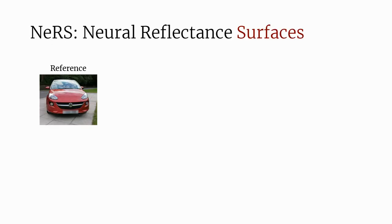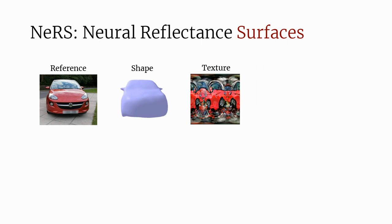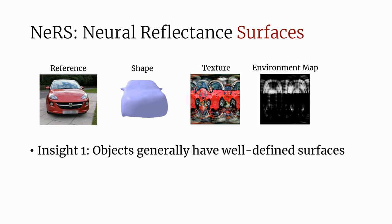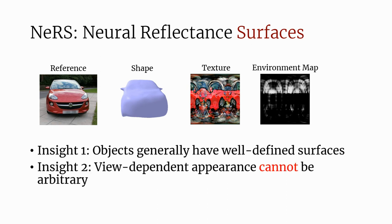To address this, we propose NeRFS, a surface-based representation that recovers shape, texture, and illumination. Although the density representation of volumetric approaches is most general, we note that most objects actually have well-defined surfaces. Secondly, view-dependent appearance should not be arbitrary and can be constrained using existing machinery.